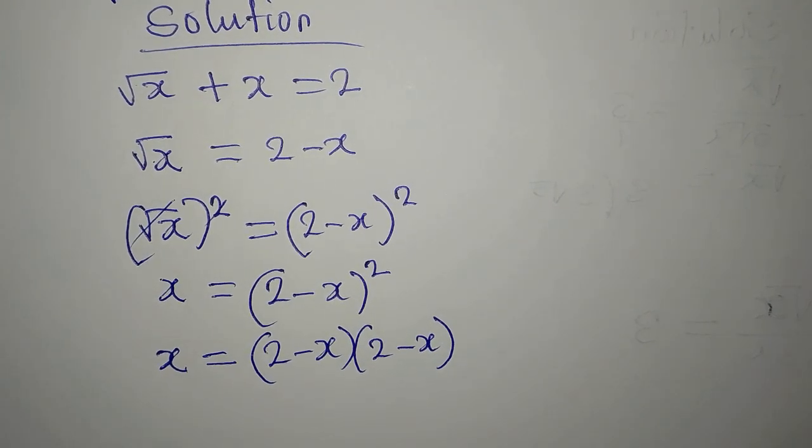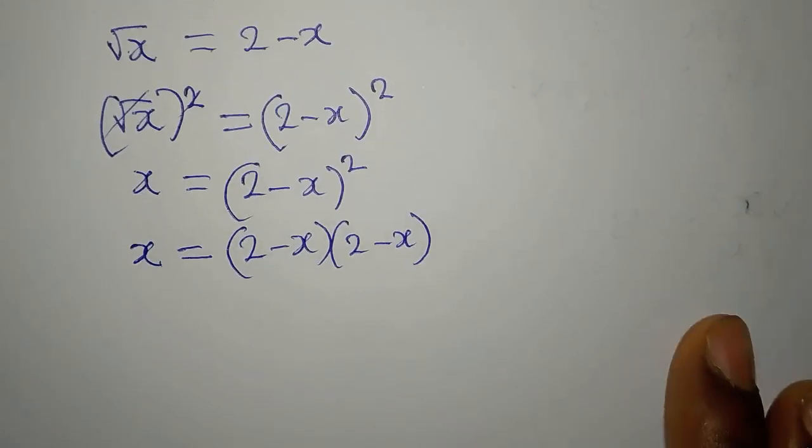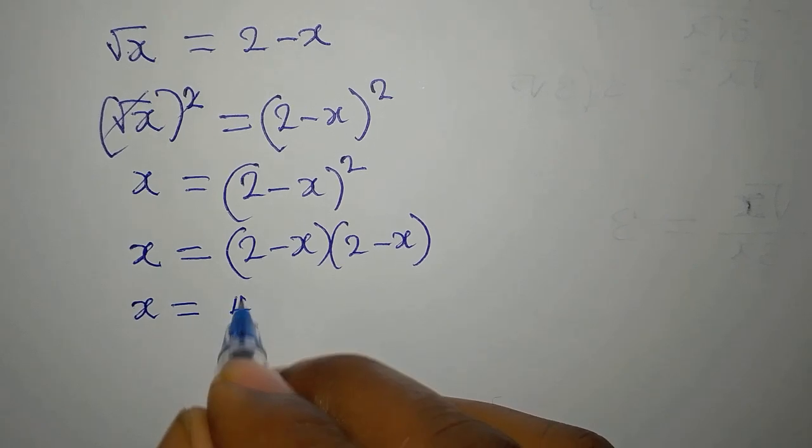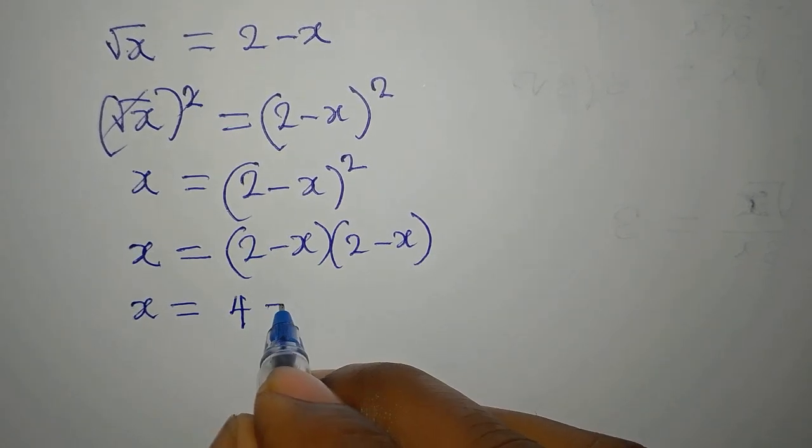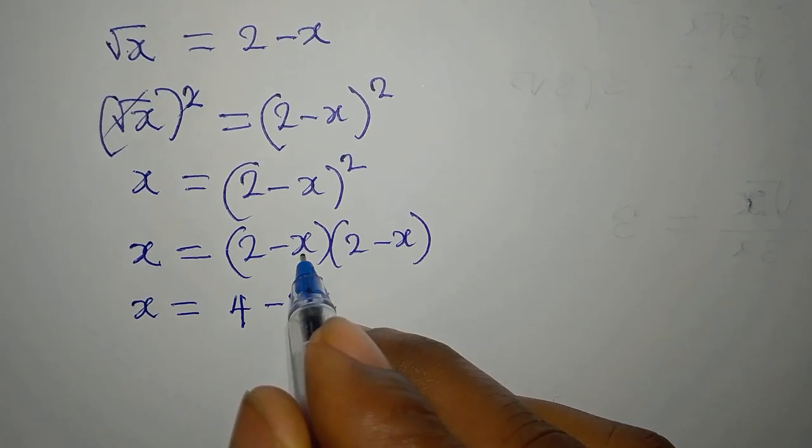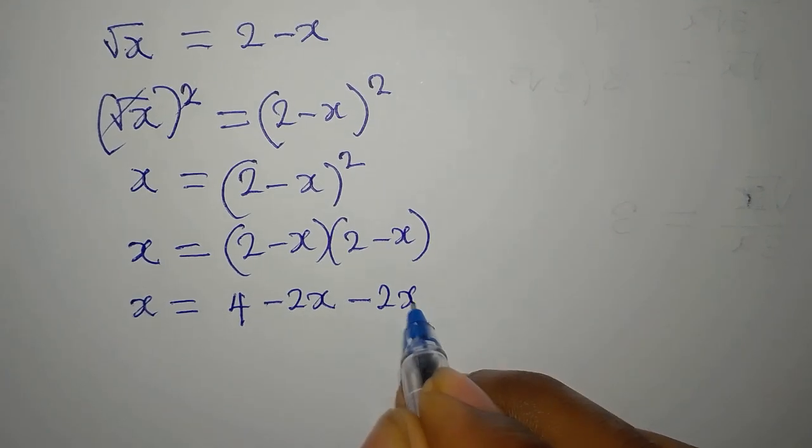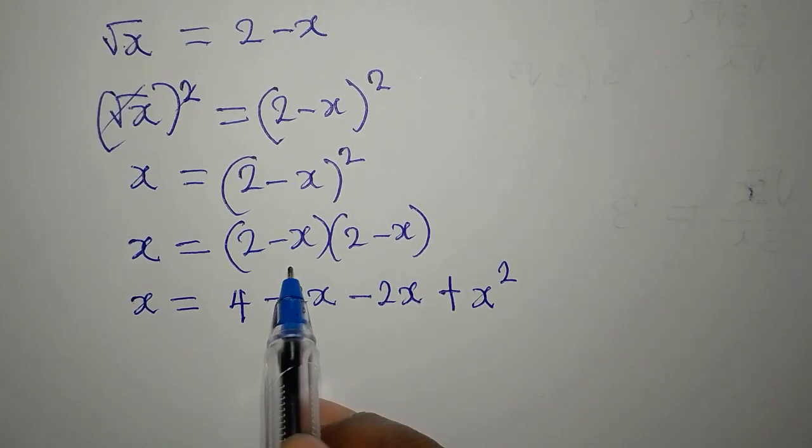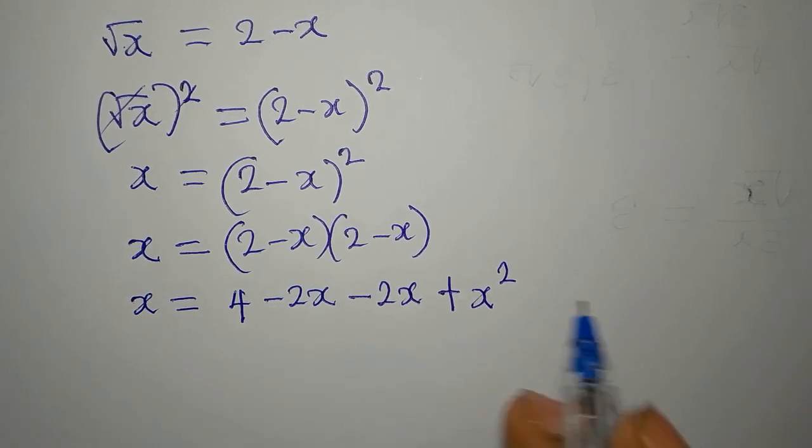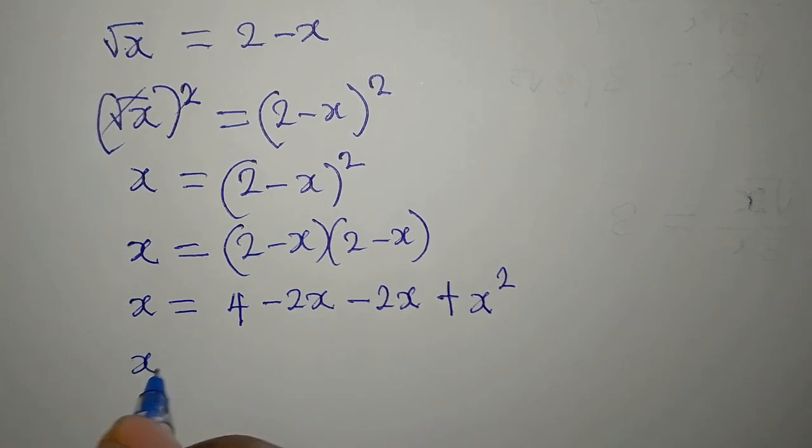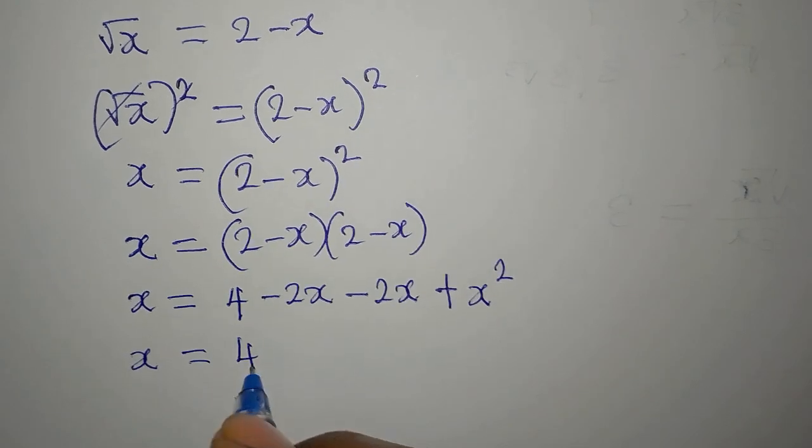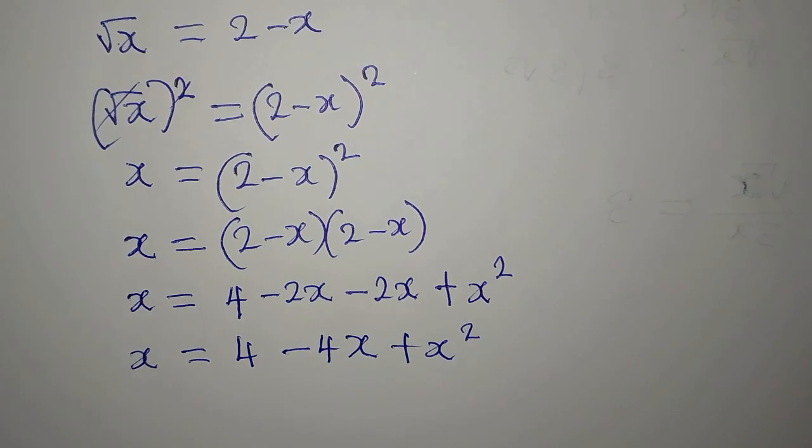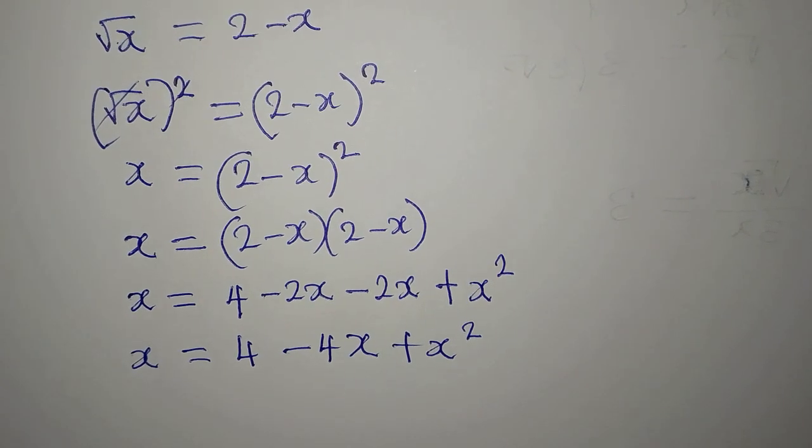Now x is equal to 2 times 2: 4, 2 times minus x: minus 2x, minus x times 2: minus 2x, then plus x squared. That is negative x times negative x is positive x squared. Our x here is now 4 minus 4x plus x squared.